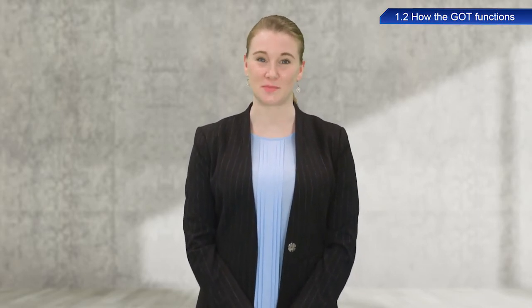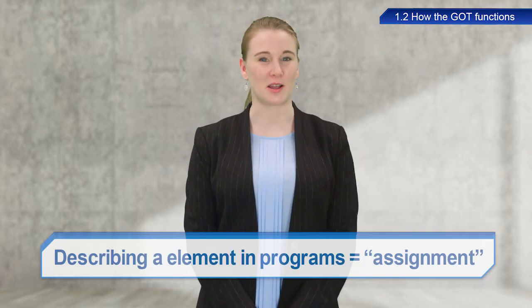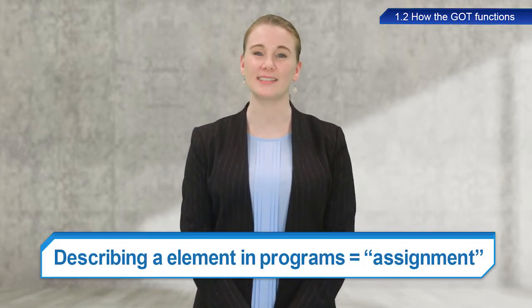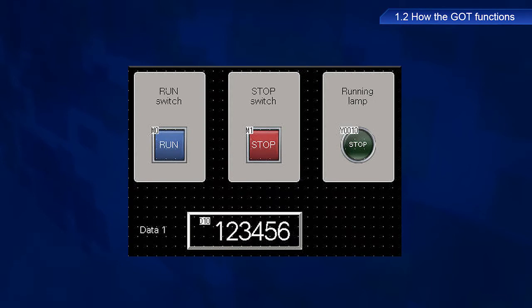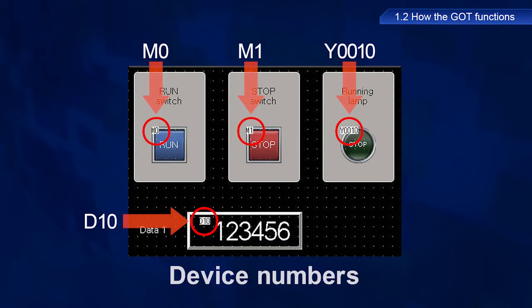Do you now have a better understanding of the relationship between GOTs and PLC programs? GOT switches and lamps must be described in PLC programs to have functionality. Describing these elements in programs is referred to as assignment. The text string M0 has been assigned to the GOT run switch. These assigned text strings such as M0 and D10 are referred to as device numbers. Device numbers are assigned to other switches and lamps in the same way. Please remember these terms as they will continue to be used throughout this training.